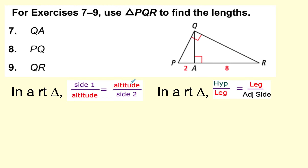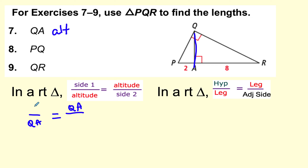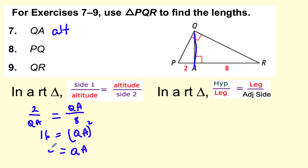Let's do this last problem — find three lengths. QA is the altitude, so I use the altitude formula. QA is the geometric mean between sides 2 and 8. QA squared equals 2 times 8 equals 16. Since 16 is a perfect square, QA equals 4. That's the first length.